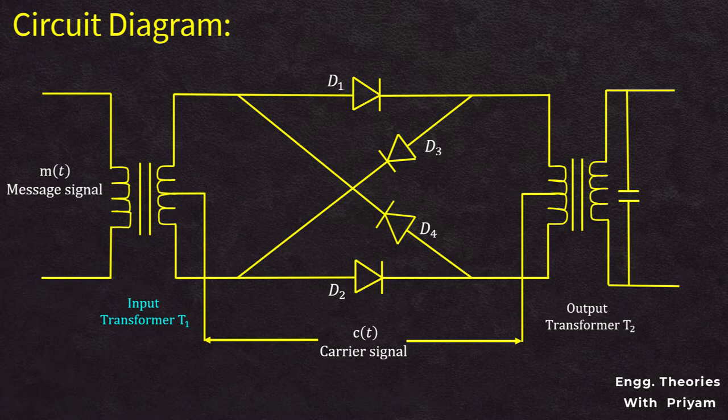The four diodes are connected in a ring configuration. The diodes used can be silicon, silicon Schottky barrier, or gallium arsenide. The modulating signal m(t) is applied as input to the primary of the input transformer T1, and the carrier signal c(t) is assumed to be a square wave with frequency fc, applied between the two center taps of the input transformer T1 and output transformer T2. The modulated signal s(t) is taken at the secondary of the output transformer T2.